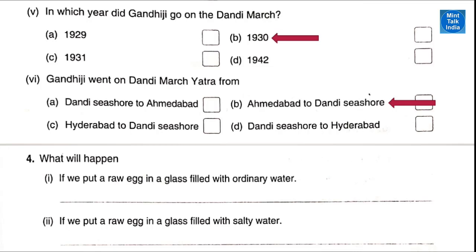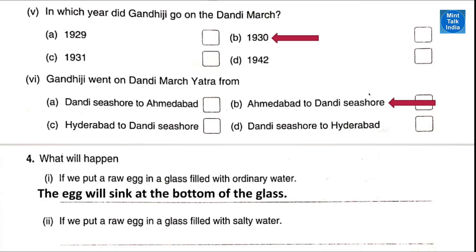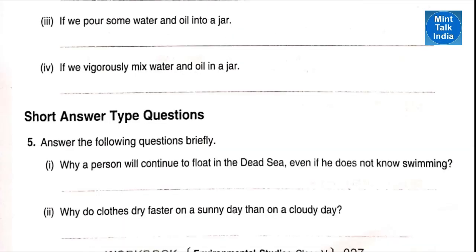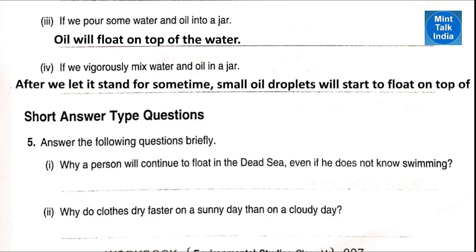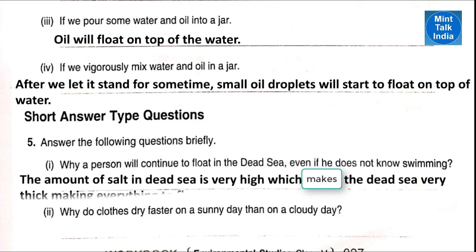Question 4: what will happen if we put a raw egg in a glass filled with ordinary water? The egg will sink to the bottom of the glass. What will happen if we put a raw egg in a glass filled with salty water? The egg will start to float on water. If we pour some water and oil into a jar, the oil will float on top of the water. If we vigorously mix water and oil in a jar, after letting it stand for some time, small oil droplets will start to float on top of the water. Why will a person continue to float in the Dead Sea even if he does not know swimming? Because the amount of salt in the Dead Sea is very high, which makes it very thick, causing everything to float on it.